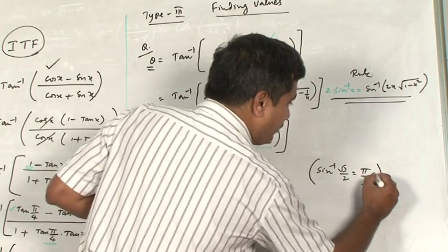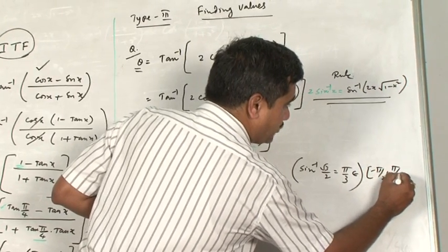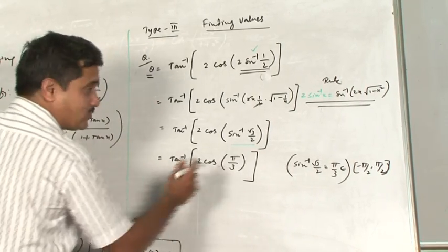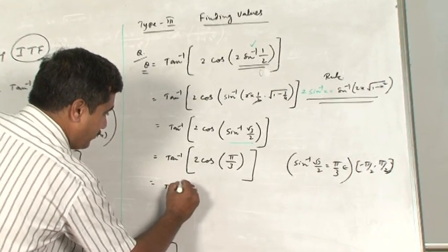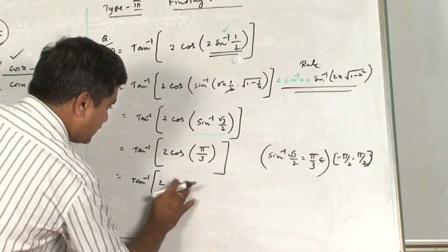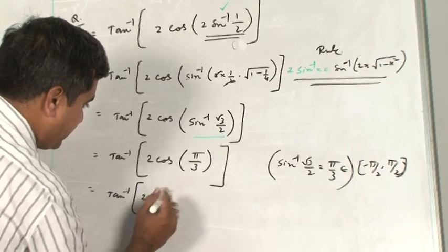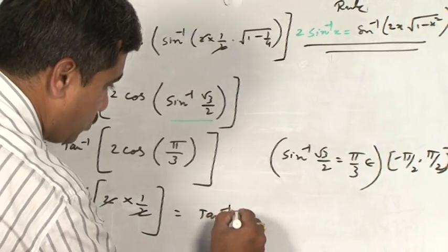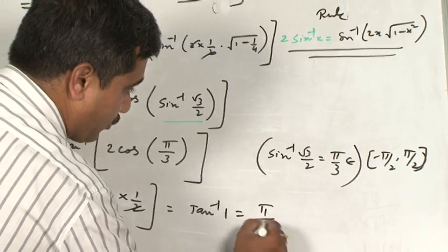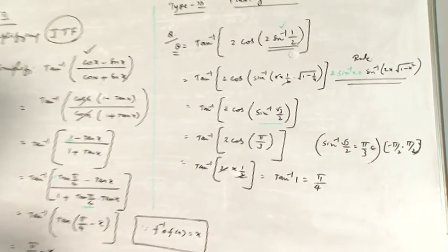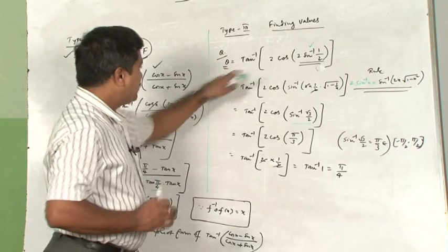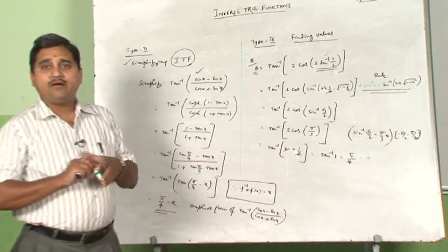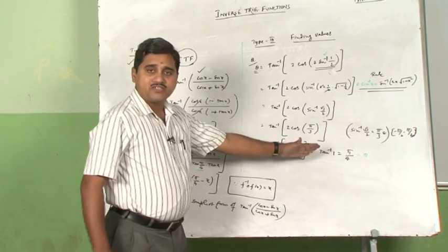We know cos(π/3) = 1/2. So tan⁻¹(2cos(π/3)) = tan⁻¹(2 · 1/2) = tan⁻¹(1) = π/4. It is quite interesting that such a large structure reduced to θ = π/4. This is how we find the values of inverse trigonometric functions.